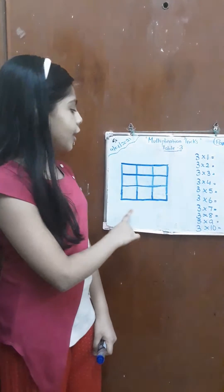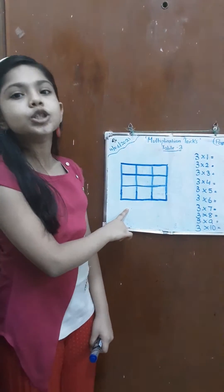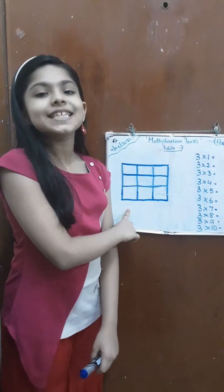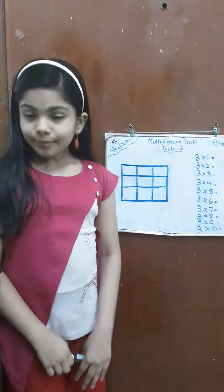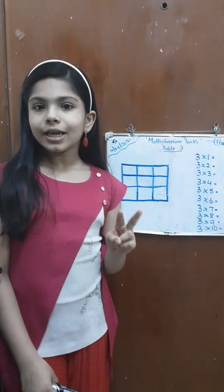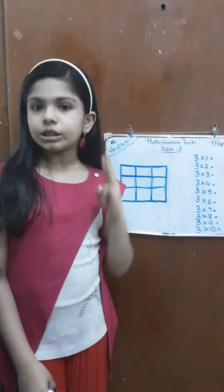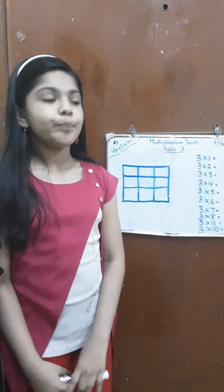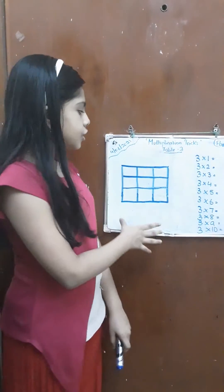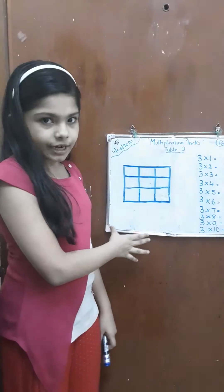Let's begin by drawing a 3 by 3 tic-tac-toe grid. That means 3 rows and 3 columns. After drawing a grid,